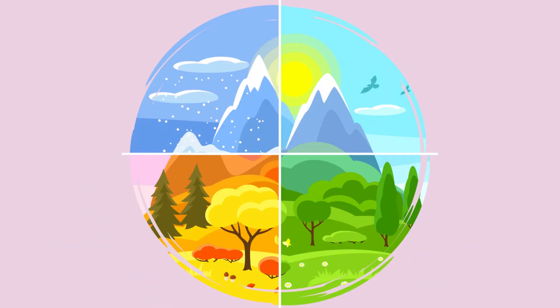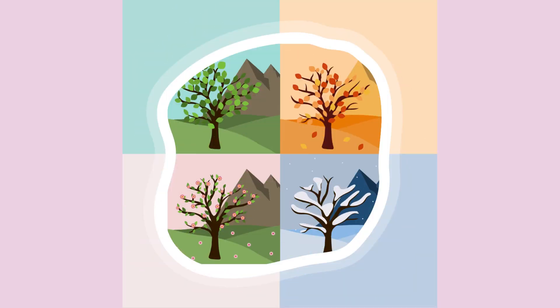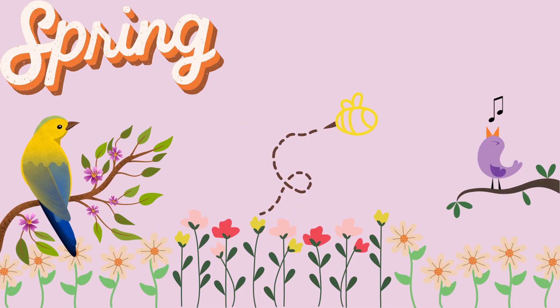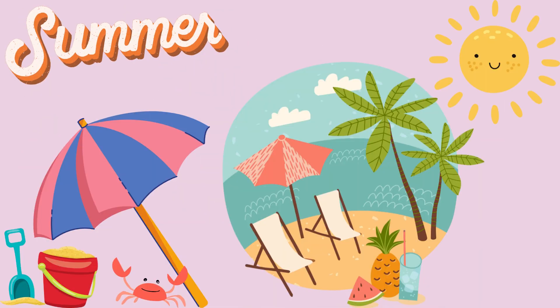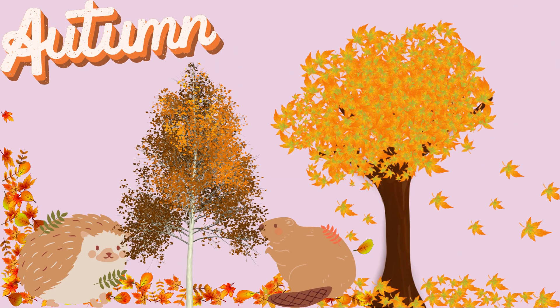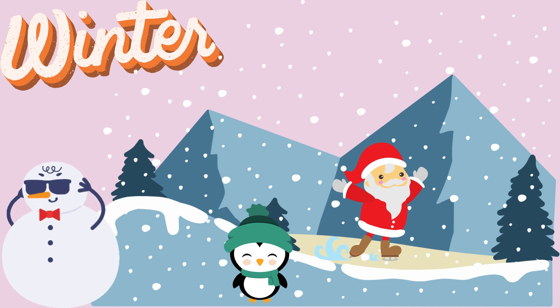The seasons are times of the year when the weather and earth change for some months. There are four seasons. They are spring, summer, fall or autumn, and winter.